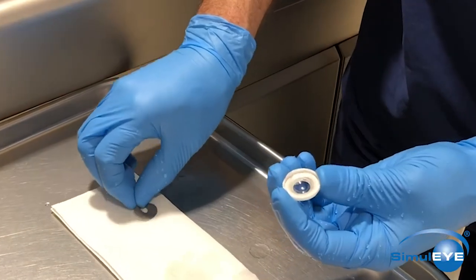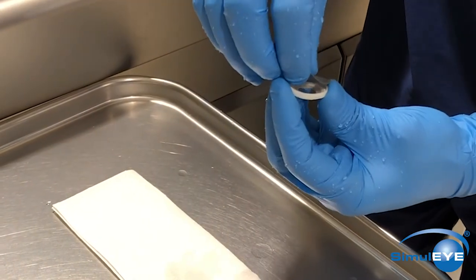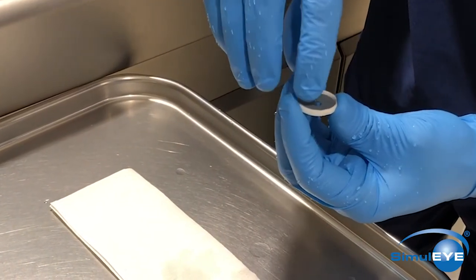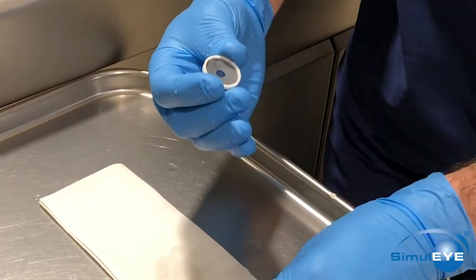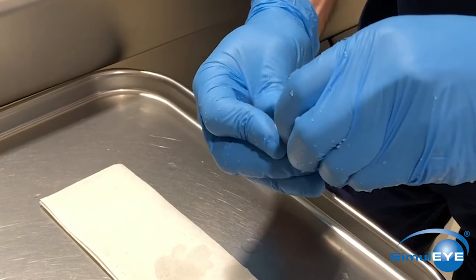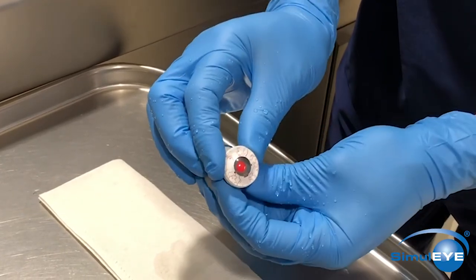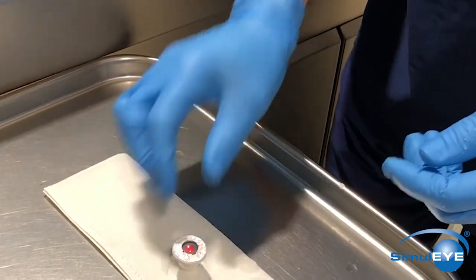To reassemble, turn the cornea cap upside down, lay the iris membrane in it, make sure it's seated well, convert the eye and reassemble it, making sure that the pupil's straight. It's ready for use again.